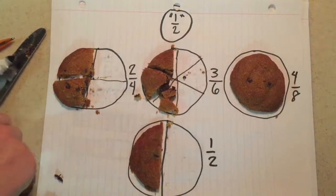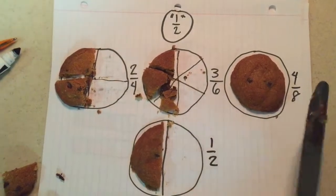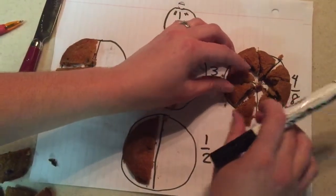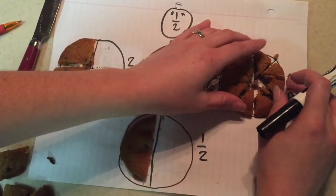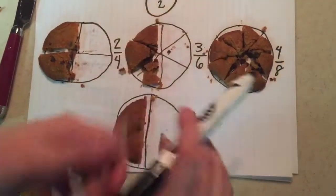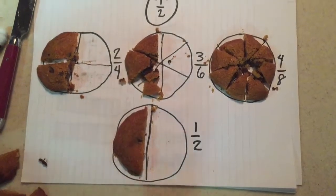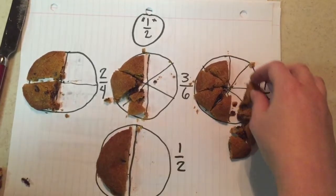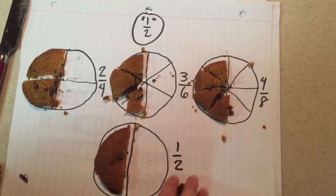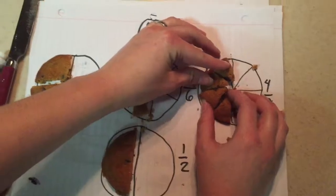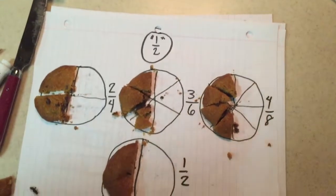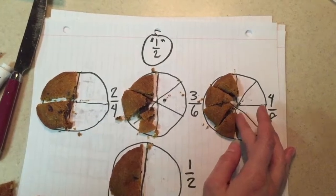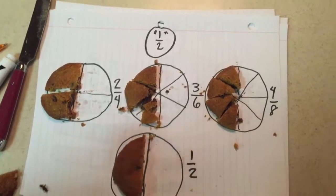Last but not least, we have four-eighths. Now there's eight parts, eight whole parts to the cookie. And if I take one, two, three, four pieces away, then that leaves four-eighths, which is equal to one-half.